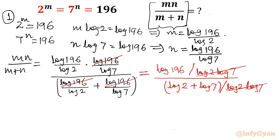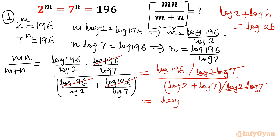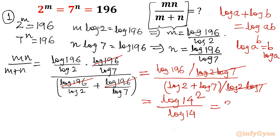Now applying the logarithm property: log A plus log B equals log AB, so log 7 plus log 2 equals log 14. The denominator becomes log 14. The numerator is also log 196. Since 196 equals 14 squared, by the property log A to the power B equals B log A, the numerator becomes 2 log 14. The denominator is log 14, so these cancel and the answer is 2. This completes Method 1 — the conventional method using logarithmic and exponent properties.